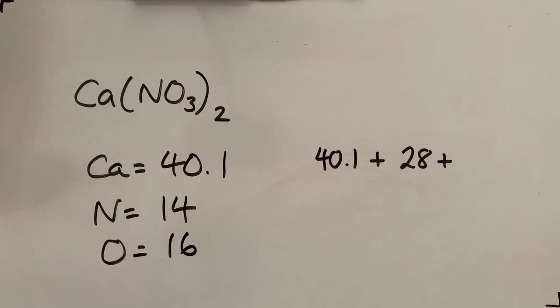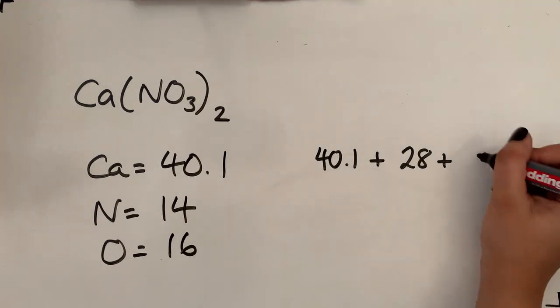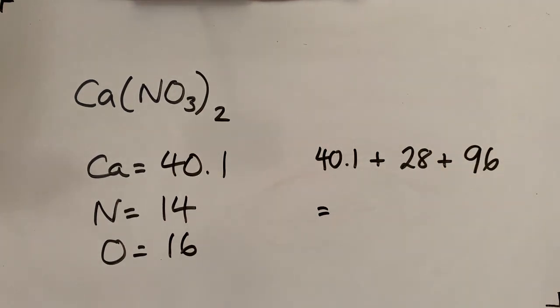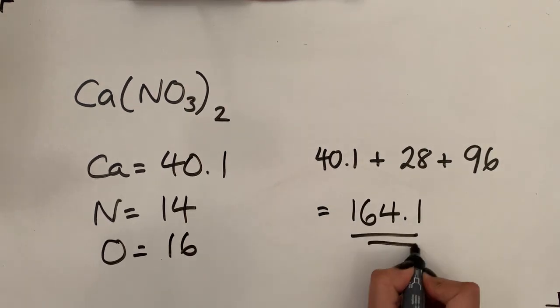And now you've got, as you can see, you've got 3 times 2 so six lots of oxygen, so six lots of oxygen is going to be 96. And then you just add those up and that should give you a molar mass of, so this is why you need your calculator, you don't have to waste time doing it in your head, that is 164.1.